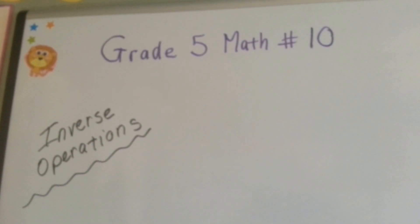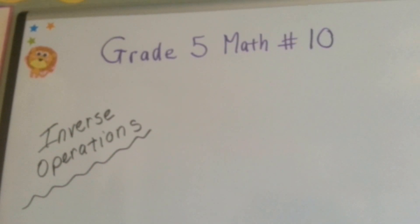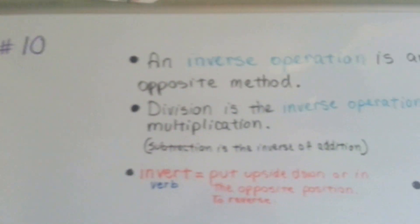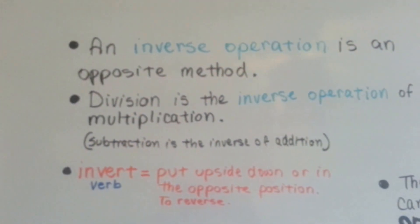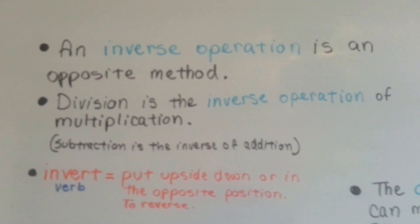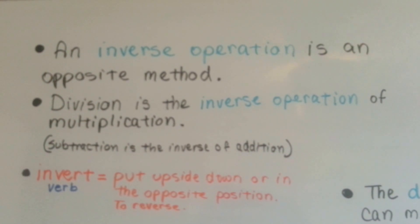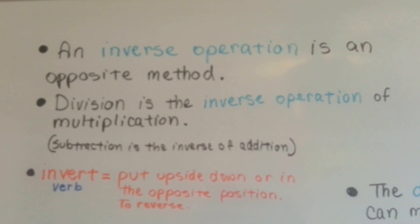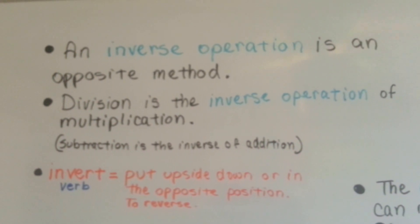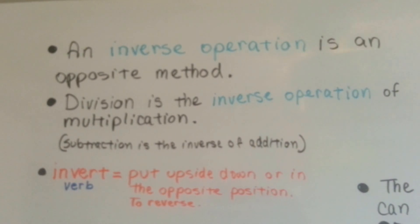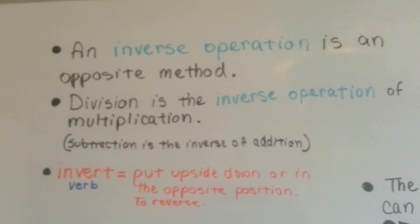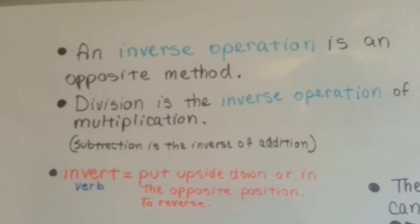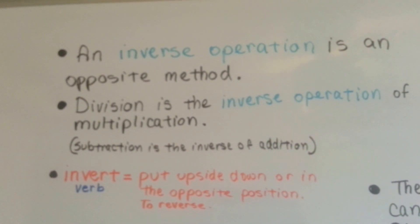Grade 5 math, number 10: inverse operations. An inverse operation is an opposite method. Division is the inverse operation of multiplication, and subtraction is the inverse of addition. The word invert means to put upside down or in the opposite position, to reverse.